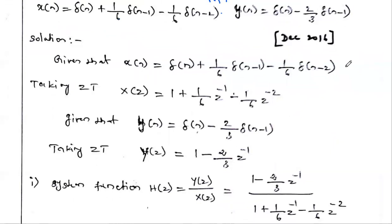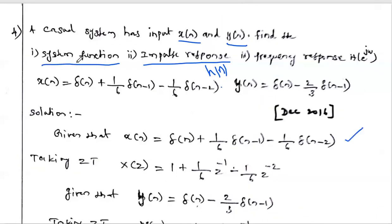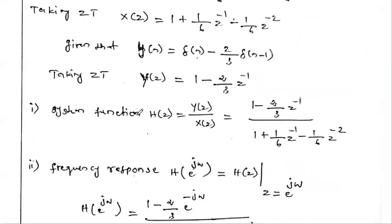Given x(n), write it as: x(n) = δ(n) + (1/6)δ(n−1) − (1/6)δ(n−2). We want the system function first. H(z) is nothing but the ratio of Y(z) divided by X(z) — that is, the ratio of the Z-transform of the output divided by the Z-transform of the input. We call it the system function or transfer function.